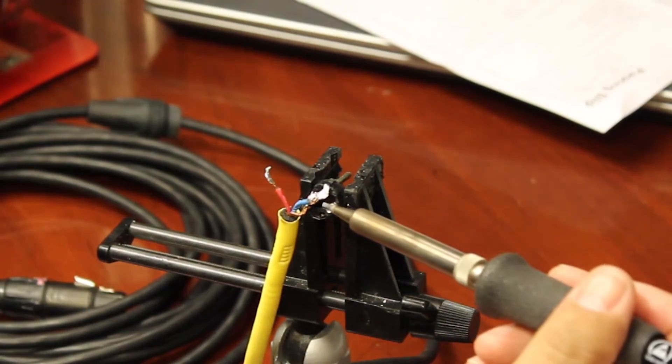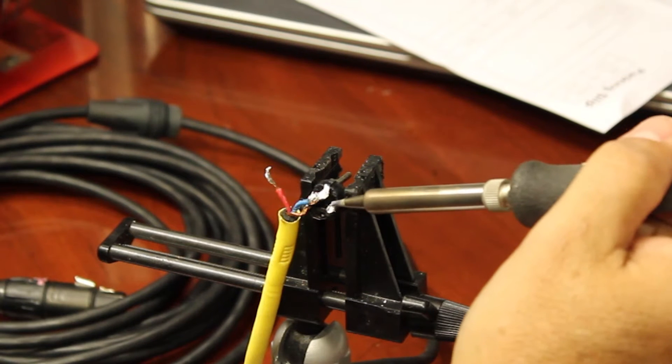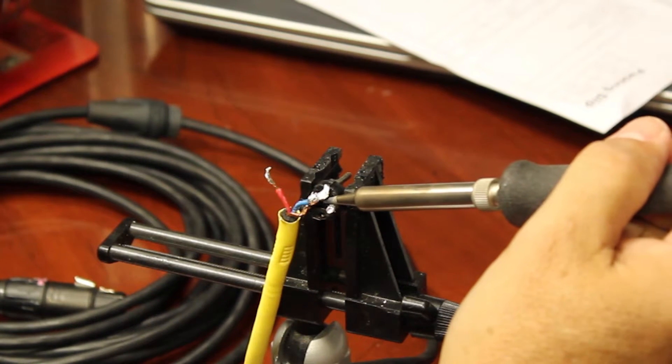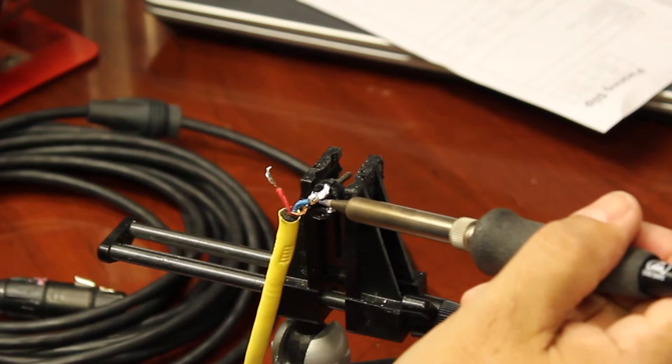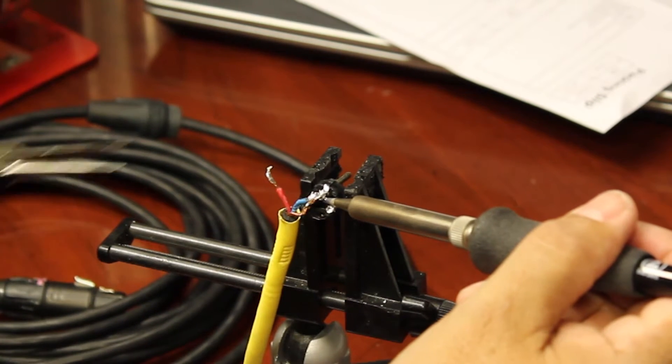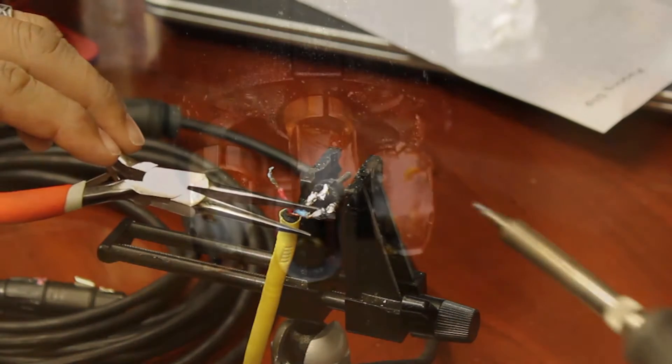The next step is to unsolder the wire from the connector terminal post. What I do is place my soldering iron on the post and not in the solder, and heat the post up. Eventually the solder melts and you can pull the wire away.